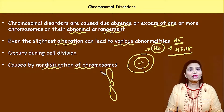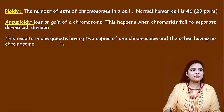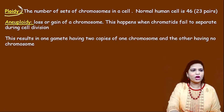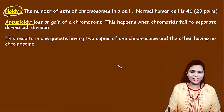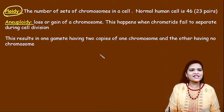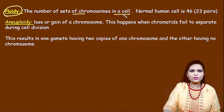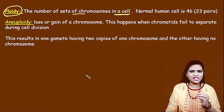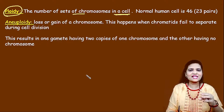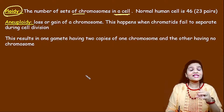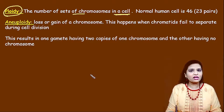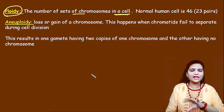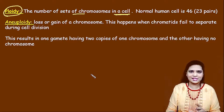What do you mean by non-disjunction of chromosomes? We have something called ploidy. Ploidy is the number of sets of chromosomes in a cell. Every species has a certain set of chromosomes — that is called ploidy, the number of sets of chromosomes in a cell.